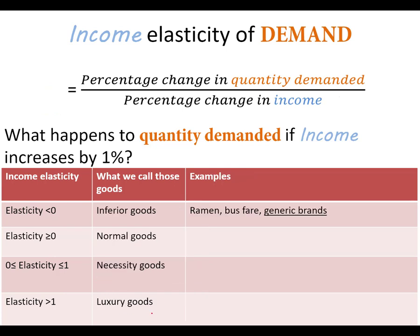Examples of inferior goods are things like ramen noodles — not saying nobody likes ramen, but we often buy them when we don't have a ton of money. Bus fare is an inferior good because when people's income goes down, they get rid of a car and take the bus more. Generic brands are often perceived as not being as good, so people buy them when they don't have as much money. When your income goes up, you switch away from generic brands and buy name brands — that's why they're inferior goods.